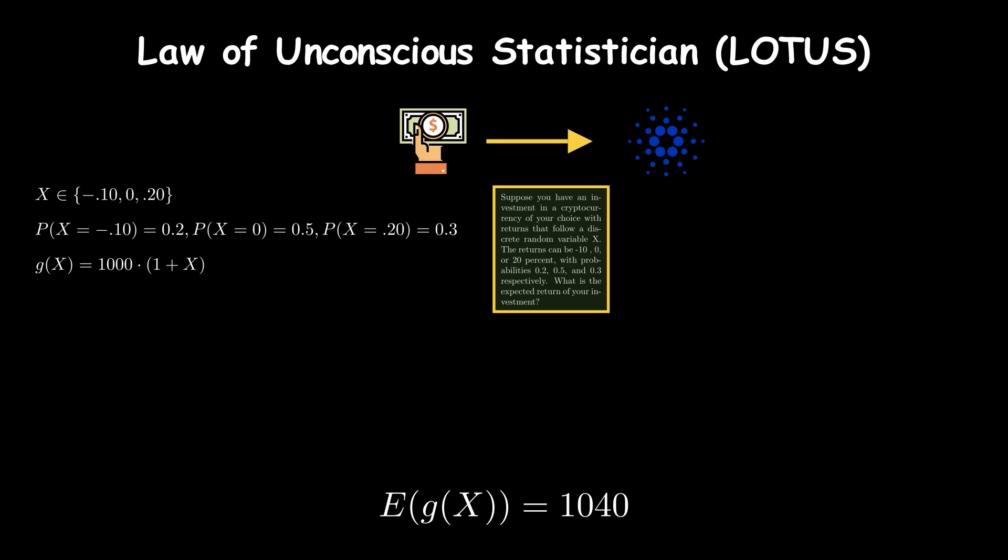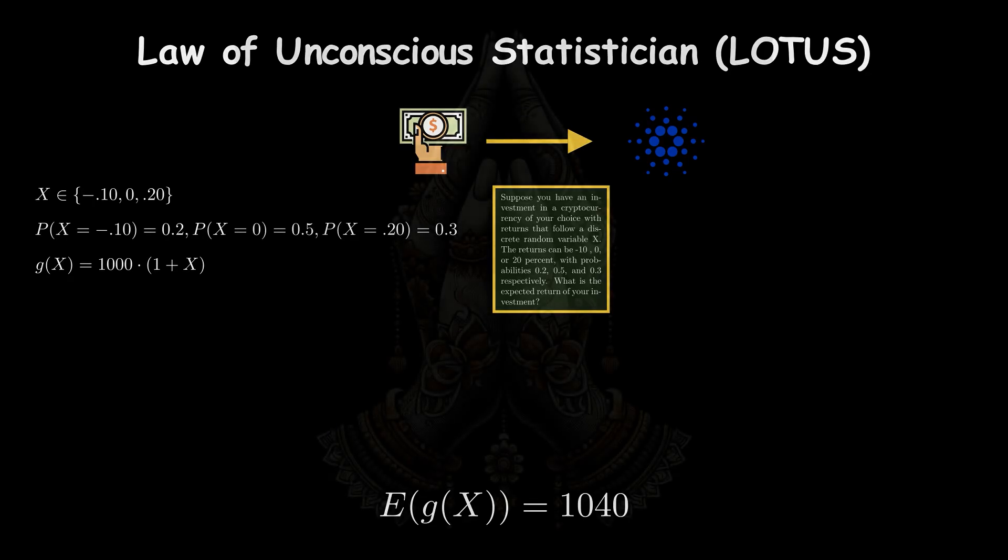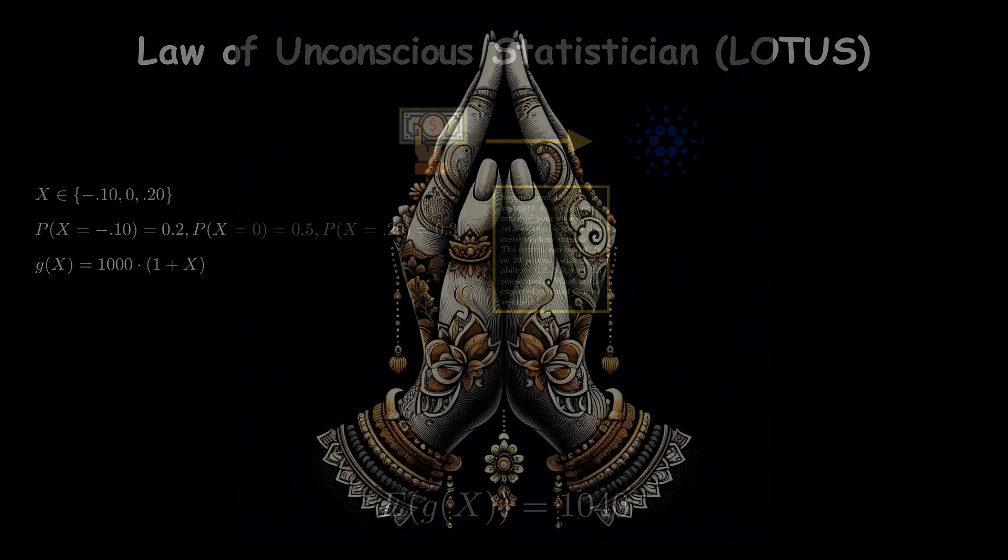In summary, LOTUS allows us to calculate the expected value of a function of a random variable without having to find the probability distribution of the function itself. That's all for this video. In the next video, we will look at what variance is. Thank you for watching.